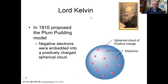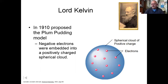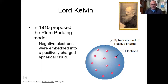We call it the plum pudding model because it's a bit like raisin bread pudding — the raisins are the electrons embedded throughout the positive pudding. We don't really eat plum pudding here in the U.S. so much.